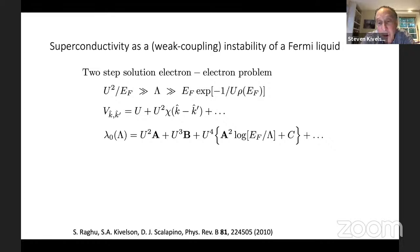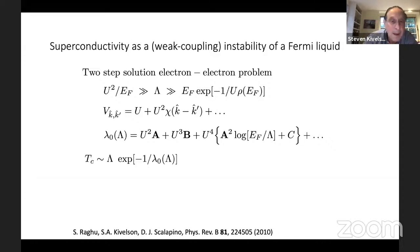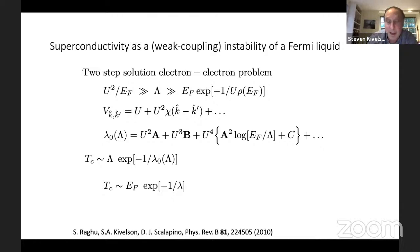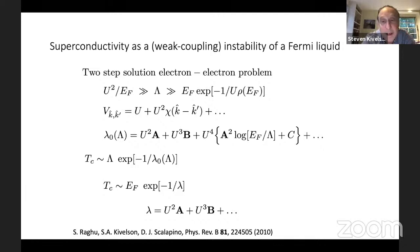We have been given explicit ways to calculate the coefficients A and B. The fourth-order term has a logarithmically divergent part, which turns out to be important. In the second stage of renormalization, we plug this in and use BCS theory to compute TC. We get an expression where the log-divergent U⁴ term is just what's needed to cancel out any dependence of the result on lambda. We end up with TC going like E-Fermi times e^(-1/λ), where lambda is given by the first two terms in the expansion. Below TC, we can calculate the gap function from the eigenvector found in this process.